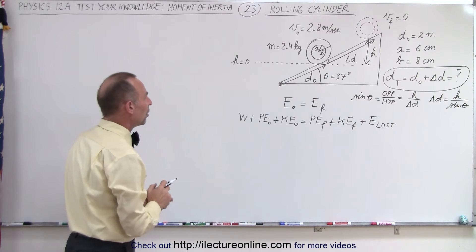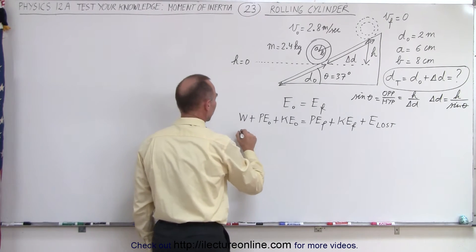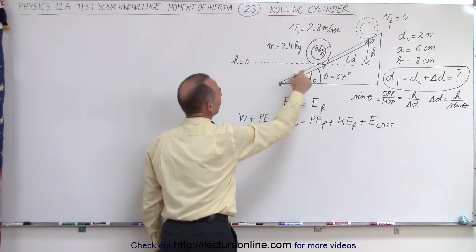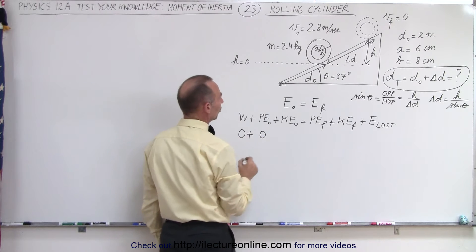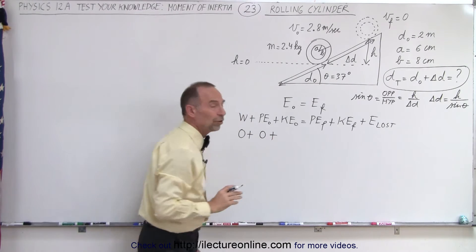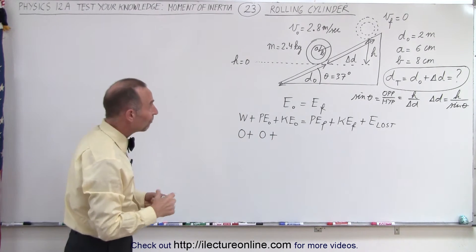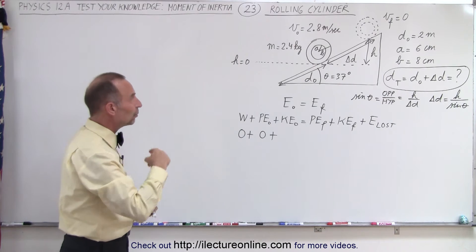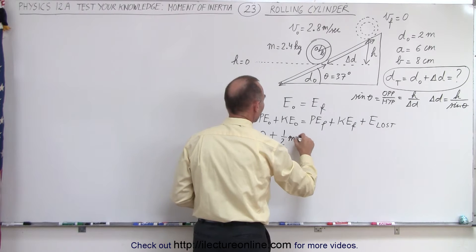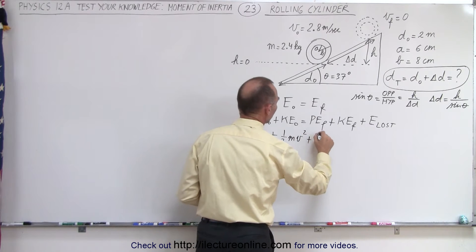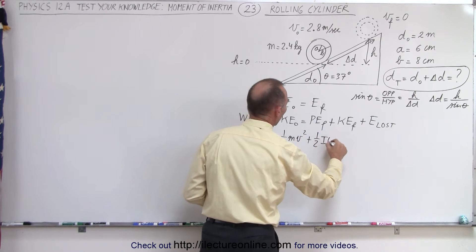Now let's plug in what we know. There's no work put into the system, that's zero. In this case, since we have let h equal zero up here, we can call that zero potential energy initially, plus kinetic energy. Now for the kinetic energy, we have both translational and rotational kinetic energy.